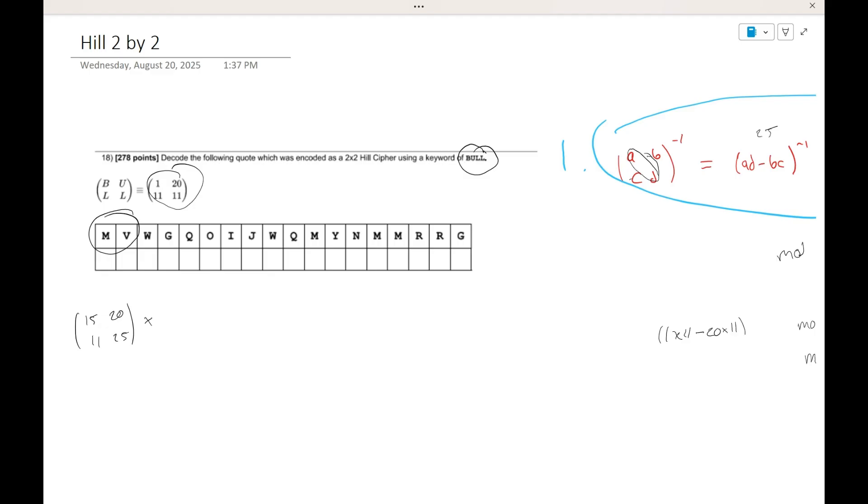And so here M is going to be 12 and V is going to be 21. If you do the math and compute this out, it's going to be 15 times 12 plus 20 times 21, 11 times 12 plus 25 times 21. If you compute this, add it all up, you're going to get 600 over 657, which mod 26 is equal to 2 and 7. Or 2 and 7. And then if we look at the numerical value, A is 0, B is 1, C is 2. And then you can do the same thing for 7. You're going to get H. So now we have C and H.